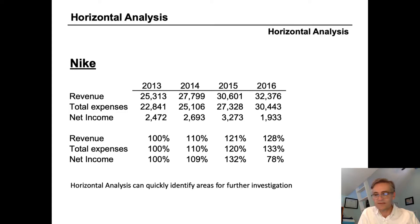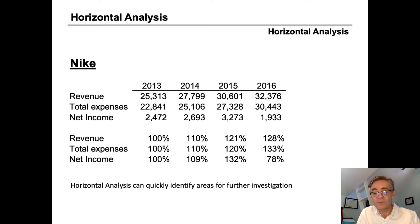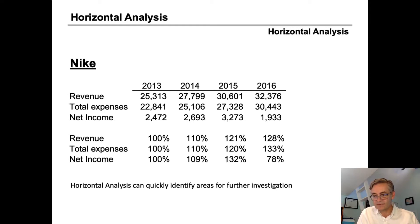We can see the effect in net income, which in 2016 is only 78 percent of what it was four years earlier. We can see clearly that while Nike has had success in growing its top line revenue, its expenses have increased faster, and that has caused a deterioration in profitability. Further, we can observe that the expense issue is quite recent — for the first three years in the data, expenses were growing at approximately the same rate as sales. It isn't until the final year that things change, so we can now focus our analysis on the salient issues this company is facing.